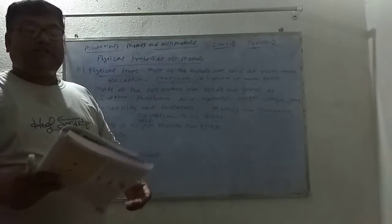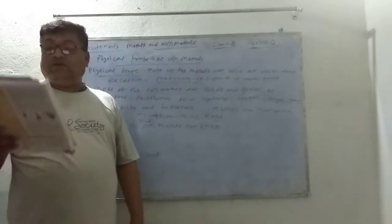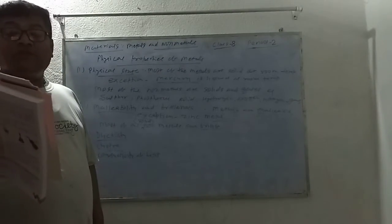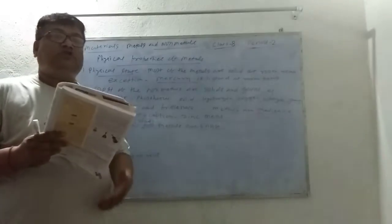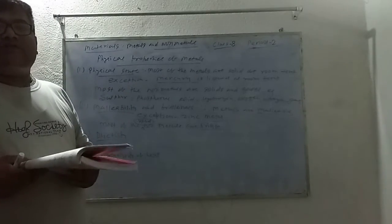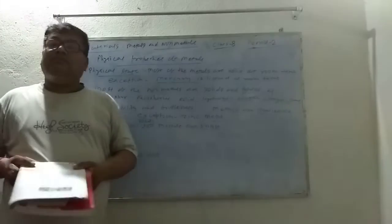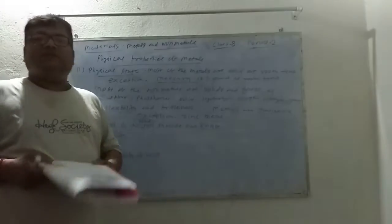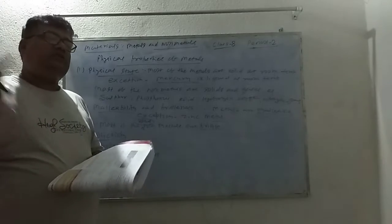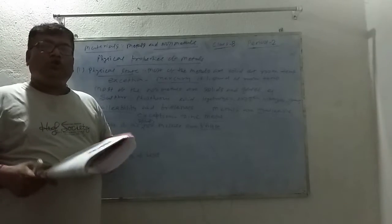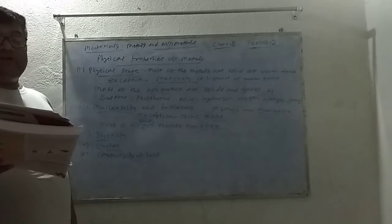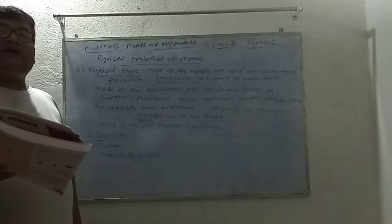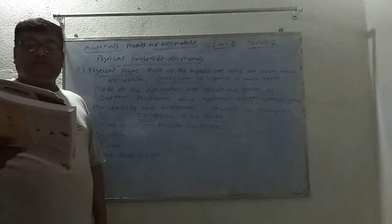This is density. Metals have high density and non-metals have low density. In metals, sodium and potassium are exceptions — their density is low. In non-metals, diamond has the highest density.